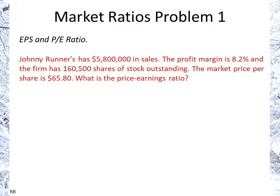Market ratios, or market value ratios — Problem One. We're going to calculate the price-earnings ratio. Johnny Runners has $5.8 million dollars in sales, a profit margin of 8.2 percent, 160,500 shares of stock outstanding, and the market price of these shares is $65.80.